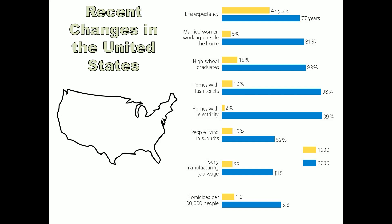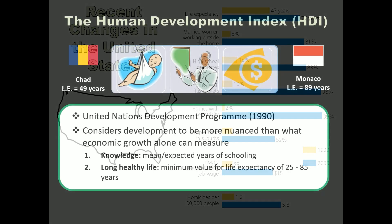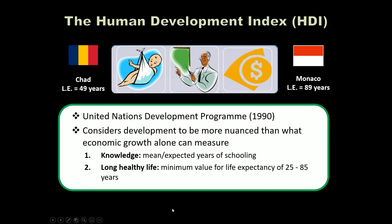Not everything about economic development is rosy. It does slow down population growth, which is a primary environmental concern in many less-developed countries. However, the more economic development a society has, the more per capita environmental damage occurs — the average American has a much bigger environmental footprint than the average citizen of India. With every stage up this economic development ladder, the average per capita environmental footprint increases, which will have implications when we get into unit four and energy resources.